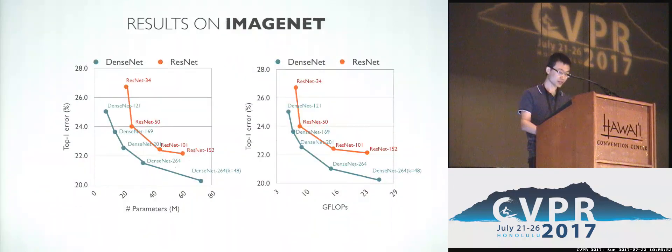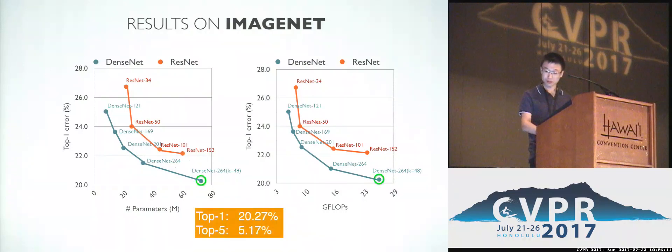On the large-scale ImageNet classification dataset, DenseNet is able to get similar performance as the ResNet, but using less than half the amount of parameters and about half amount of computation. We recently trained a 264-layer DenseNet. It got 20.27% top-one error on ImageNet.